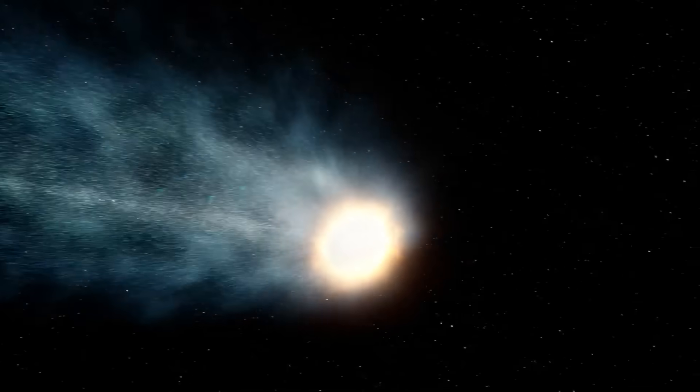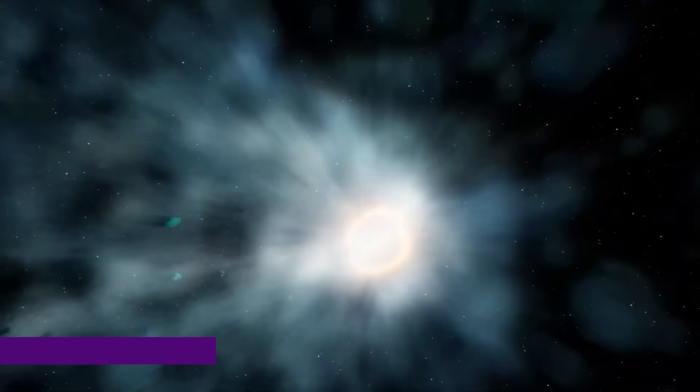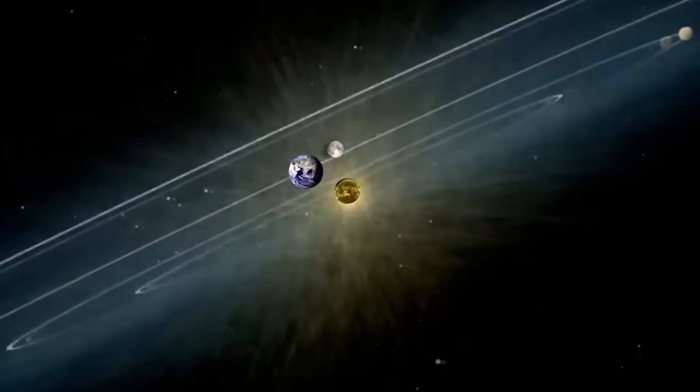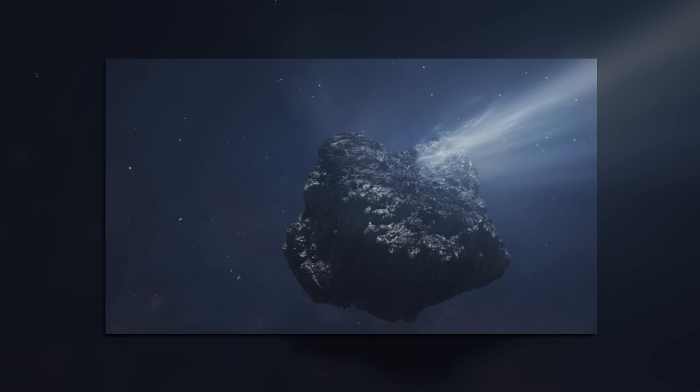3i/ATLAS is moving at over 150,000 miles per hour. It's not looping around the sun like most solar system objects. It's cutting through on a nearly straight line. That tells scientists something huge. It's not from here.